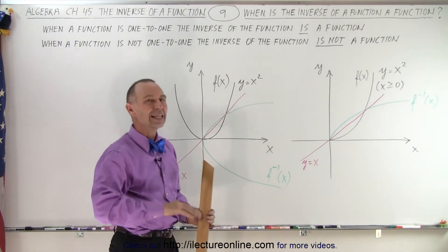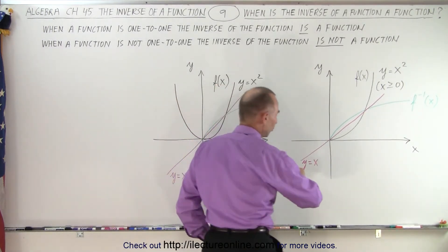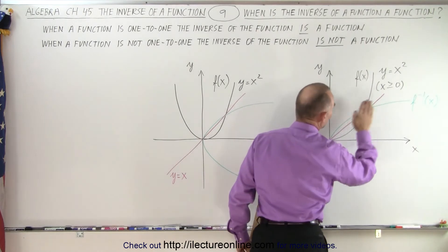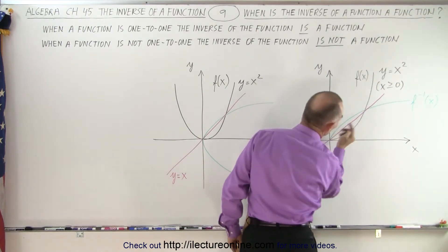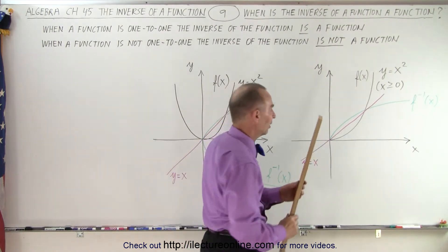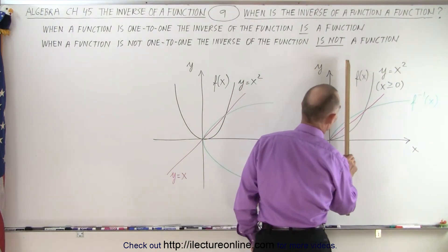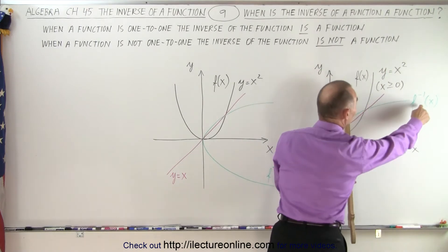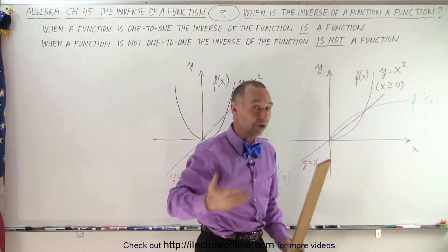Now the inverse of the function. Notice we have the y equals x line and the green curve right here is simply the mirror image of the black line. And notice I can do a vertical line test there. The vertical line only crosses the inverse of the function once. Therefore, it is a function.